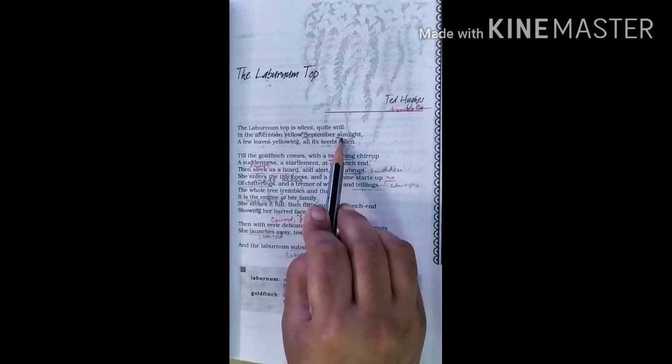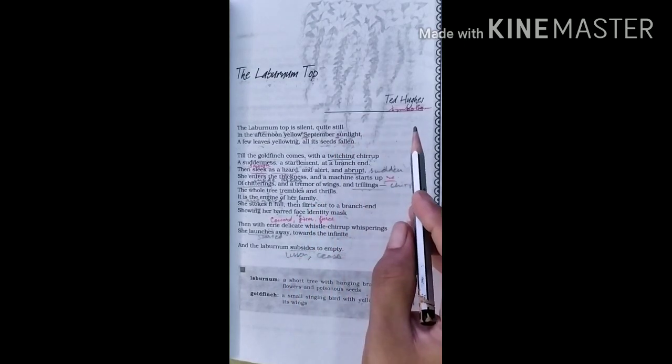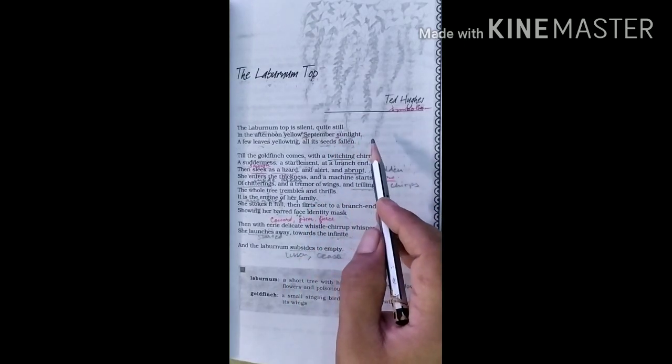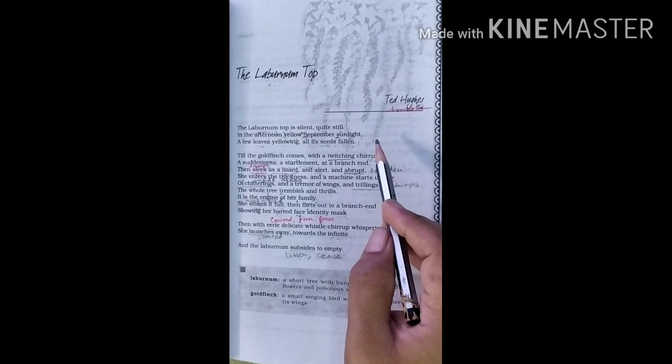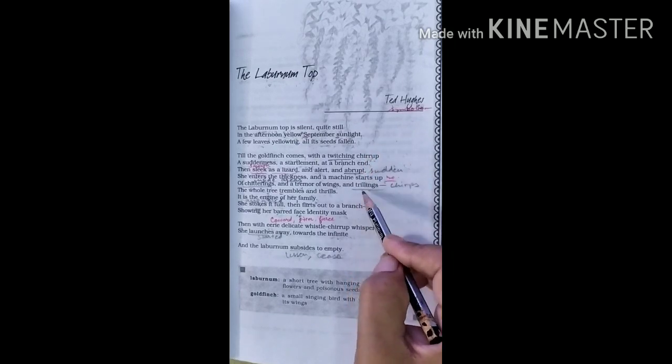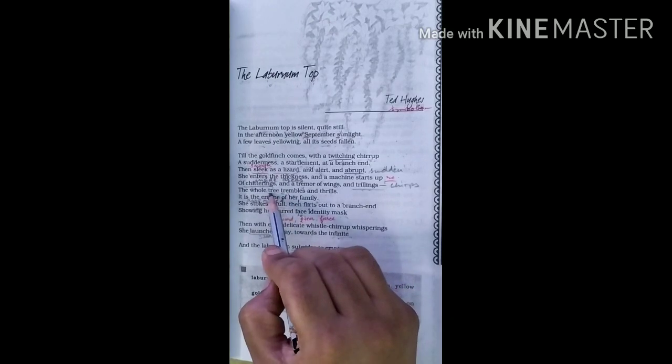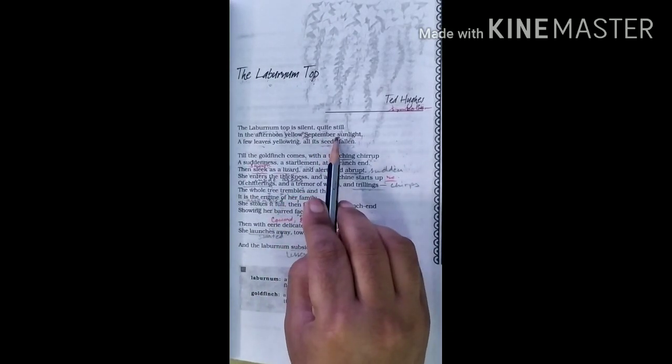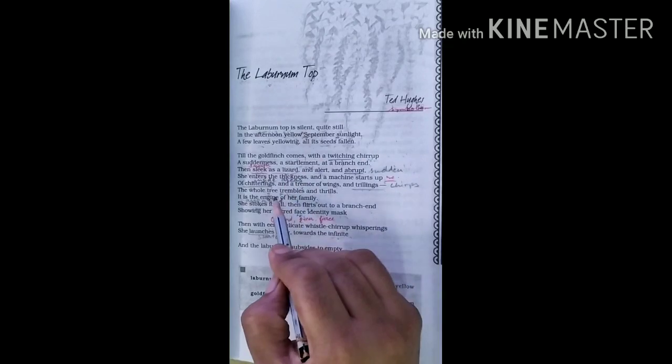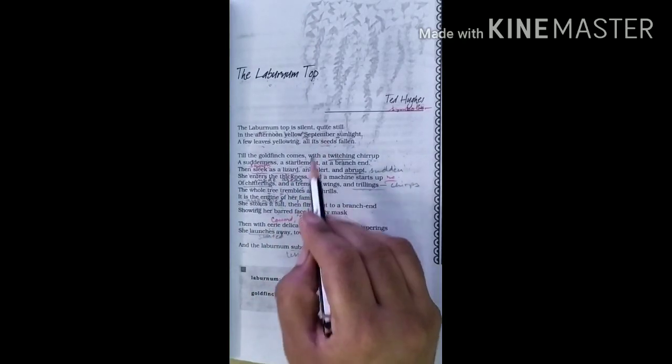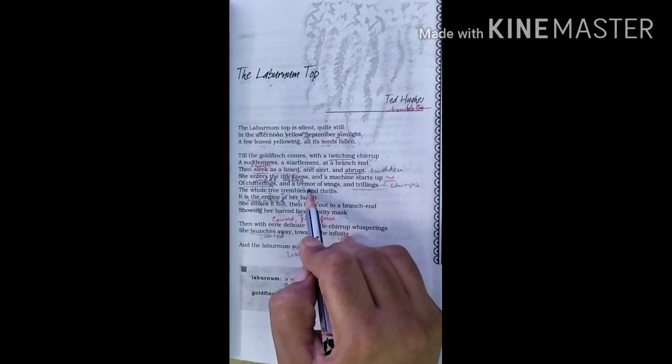September sunlight. Tree trembles. Tree trembles. So tree trembles here, ter sound is used, s sound is used. So because of s and because of ter sound, alliteration is used.